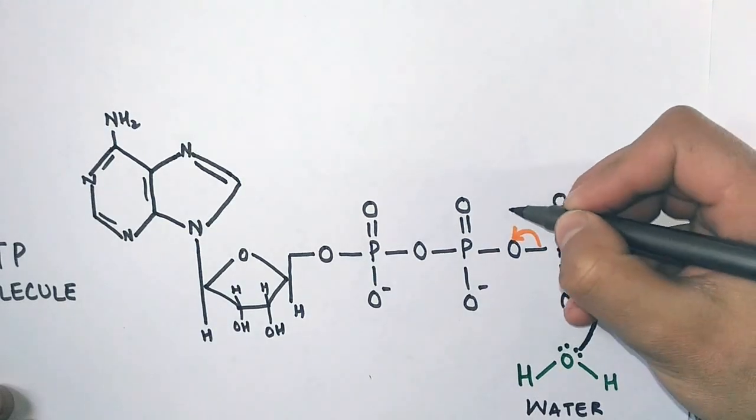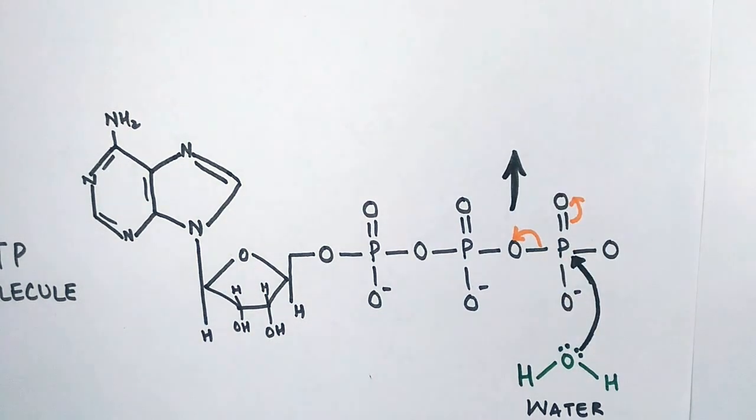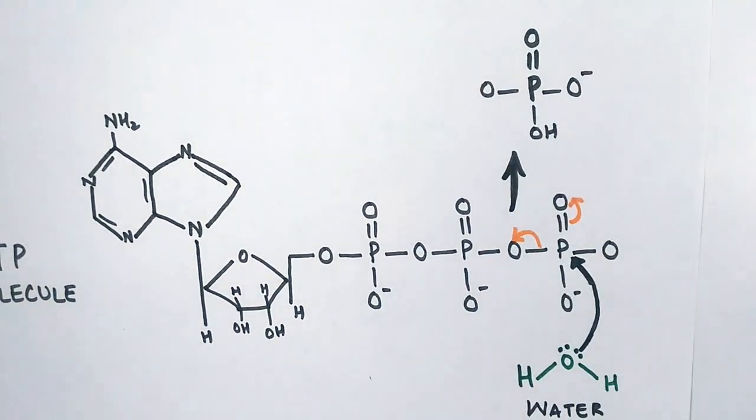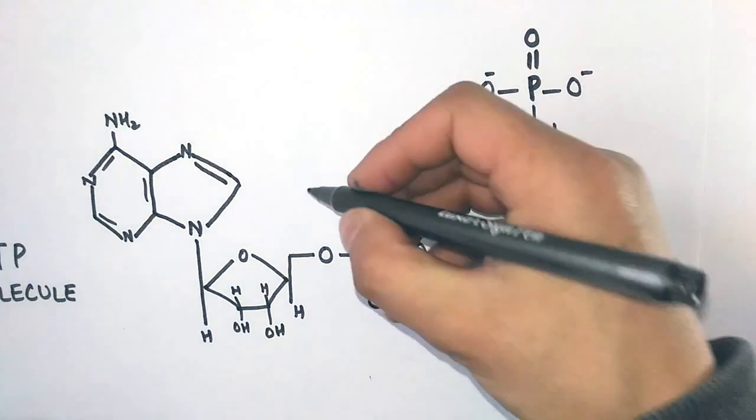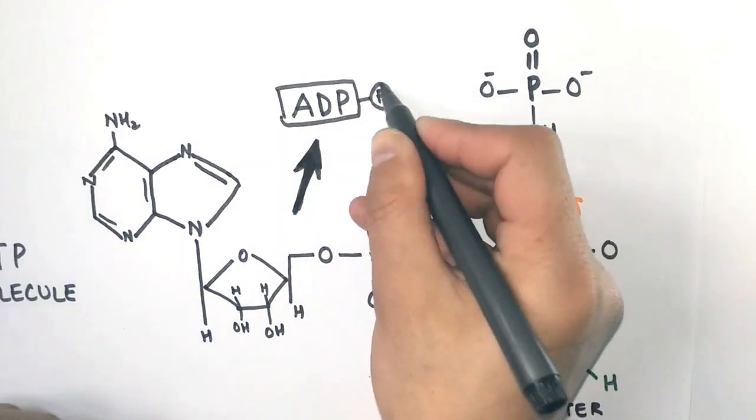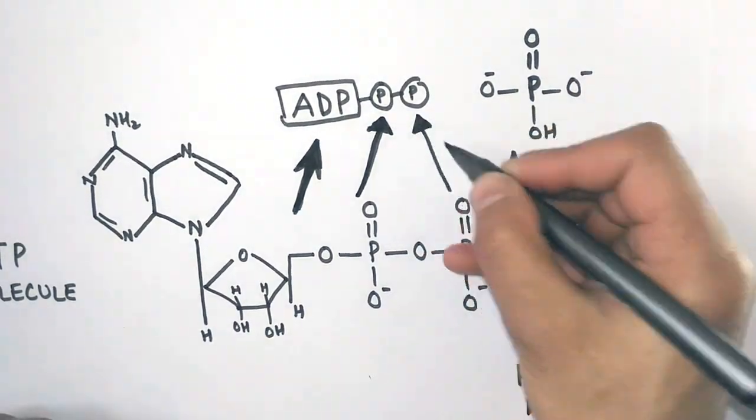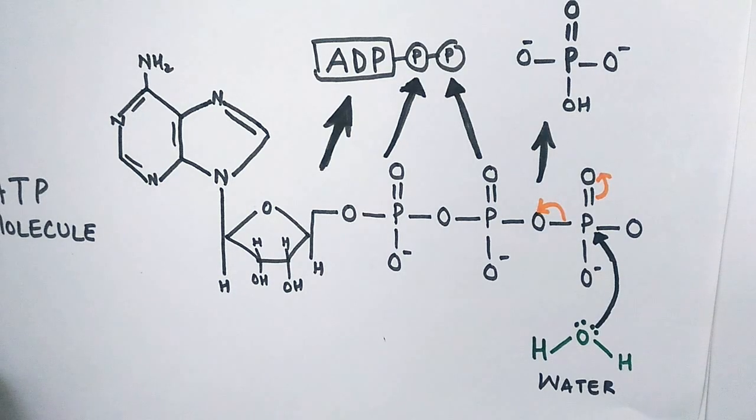By the hydrolysis of this ATP molecule, ATP gives up one phosphate group—the terminal gamma phosphate—and we also get another molecule in the form of ADP, because as ATP loses one phosphate group, it becomes adenosine diphosphate.